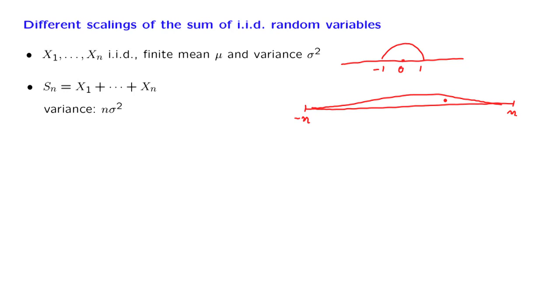We can obtain a different view of this sum if we divide it by n, in which case we obtain the sample mean. In this case, the variance goes to 0 as n goes to infinity. And as a consequence, the distribution is highly concentrated around 0. This is also what the weak law of large numbers tells us. The bulk of the distribution is concentrated in an arbitrarily small interval around 0, so this width becomes smaller and smaller as n goes to infinity.